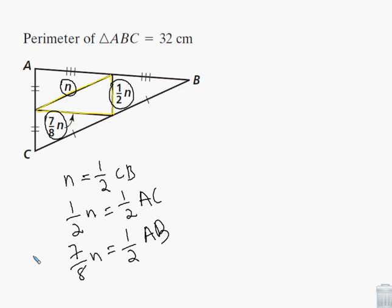And then seven-eighths n is equal to half of AB. So seven-eighths n equals one half of AB. So now we have these three relationships with n and these other three lengths, CB, AC, and AB. And we know that when you add them together you get the perimeter of the triangle, which is 32. So CB plus AC plus AB equals 32.